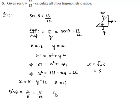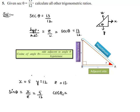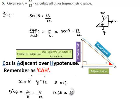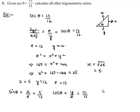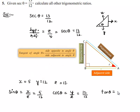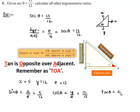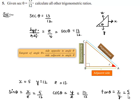Cos theta equals adjacent side by hypotenuse — the adjacent side is y and the hypotenuse is z — which equals 12 by 13. And tan theta equals opposite side by adjacent side, which is x by y, equal to 5 by 12.